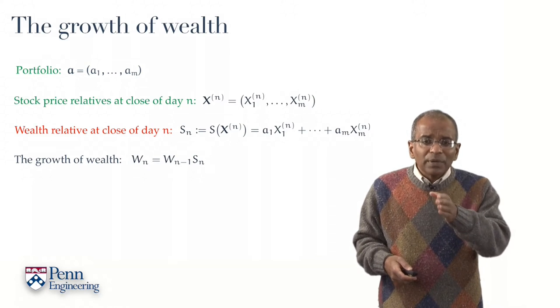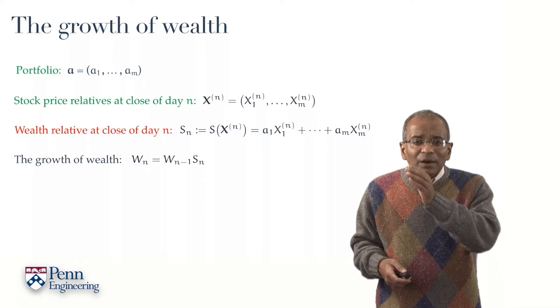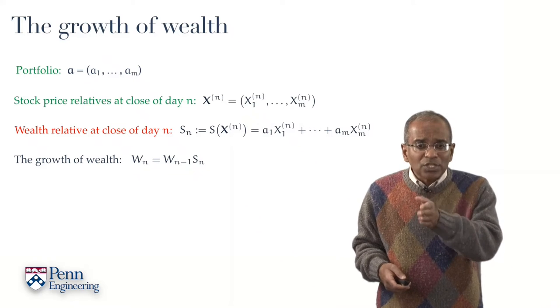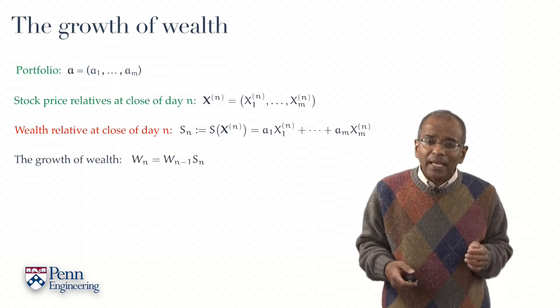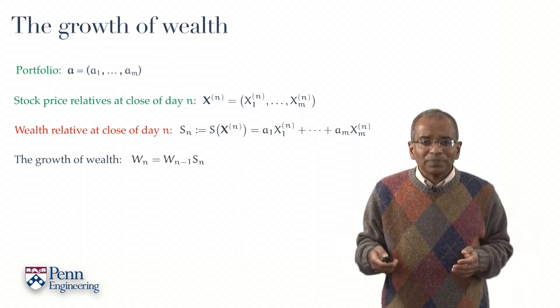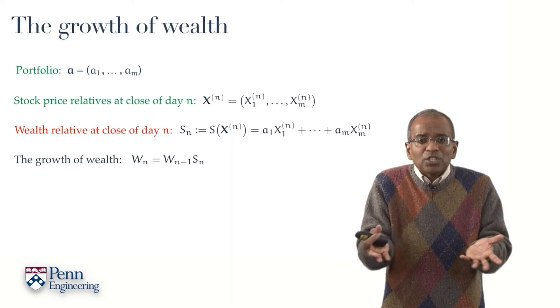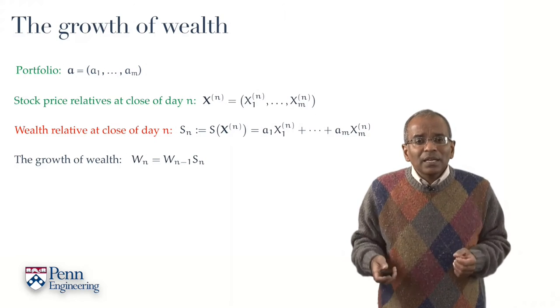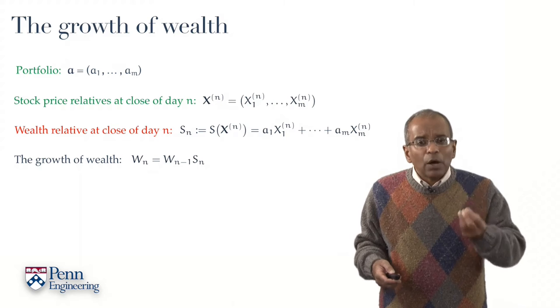But of course we realize that the wealth relatives S_1, S_2, S_3 through S_n are all chance driven, and so of course this is now a chance driven entity. Can we say anything reasonable about it?